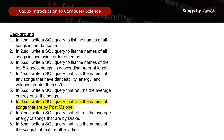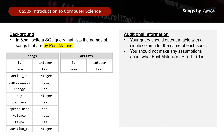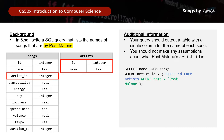Moving on to the next query, we want to list the names of all songs that are written by Post Malone. This is the first query that mentions an artist, so we need to link both tables together. As mentioned earlier, the artist_id field from Songs and the id field from Artists will be the common field. So our query will be: SELECT name FROM songs WHERE artist_id = (SELECT id FROM artists WHERE name = 'Post Malone'). That is how you list the names of songs written by Post Malone.